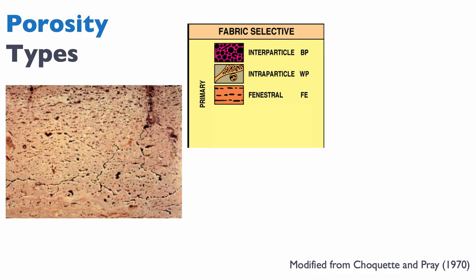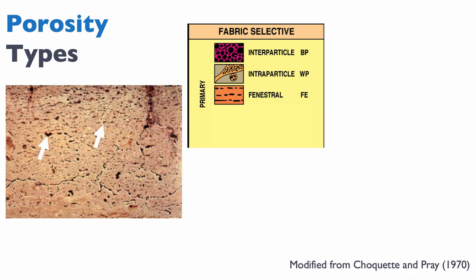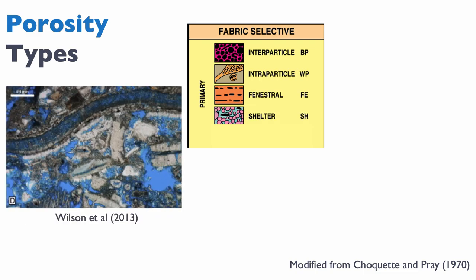Another common primary porosity in fine-grain muddy sediments is fenestral porosity. Fenestral porosity happens in tidal flats where you have lots of micrite, but also where you have a lot of organic and bacterial activity in the sediments that generates CO2 or gas bubbles. These bubbles can actually be trapped during the lithification process of that mud — it is primary because it's there at time of deposition and fabric selective because the fabric of the mud is not disturbed. Those black spots you see in this example are fenestral porosity. There's also shelter porosity, where a component protects the porosity below it — here a bivalve preserves the porosity beneath it.